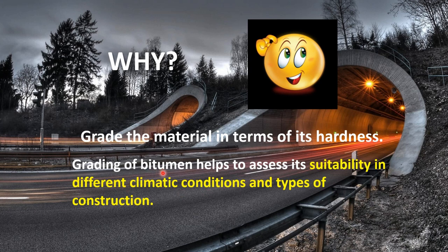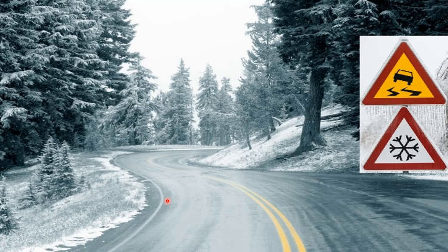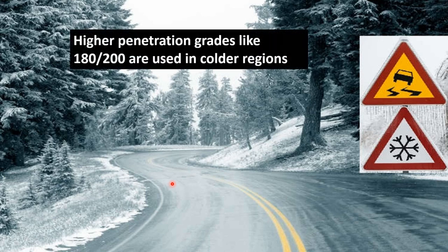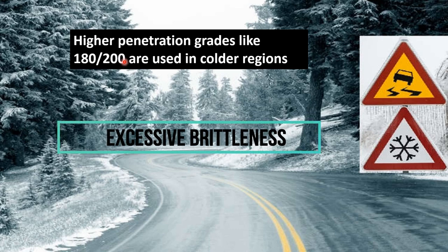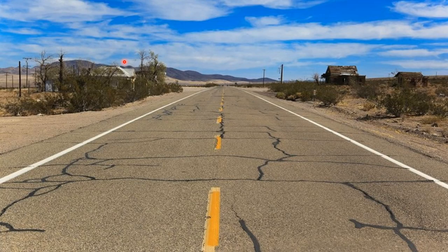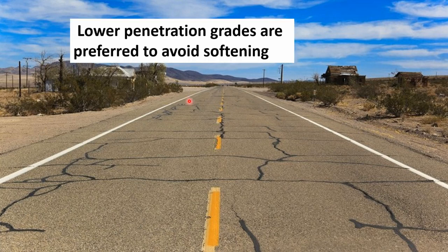Let me explain this with examples. Suppose you have to construct a road in a colder region — then we prefer 180 by 200 grade of bitumen to avoid excessive brittleness. And suppose you have to construct a road in a warmer region like the desert — then we prefer lower penetration grades to avoid softening.